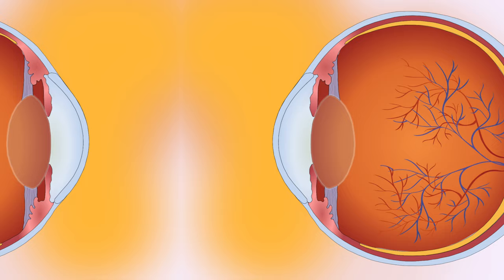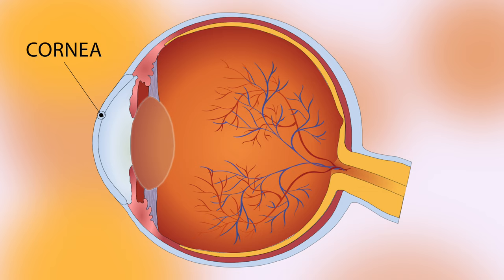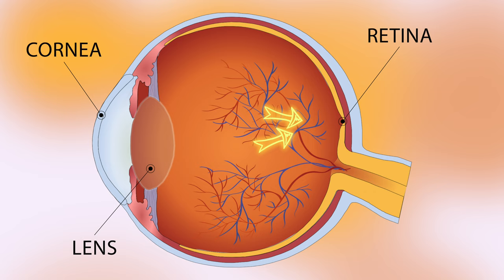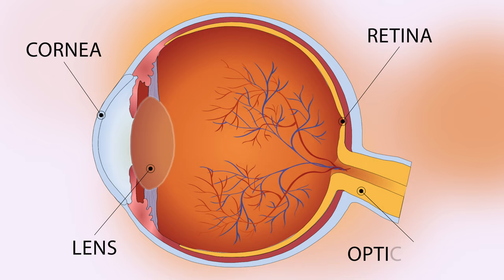Before we discuss what cataracts are, let's first review some basic eye anatomy. In the front of the eye is clear, transparent tissue called the cornea. Inside the eye is the lens, whose function is to focus incoming light onto the retina, which is the light-sensitive tissue in the back of the eye. The retina takes the light signals and sends it through the optic nerve to the visual cortex, allowing us to see.